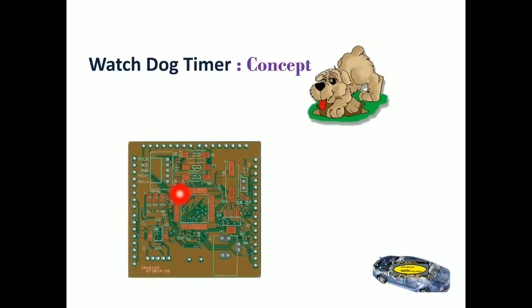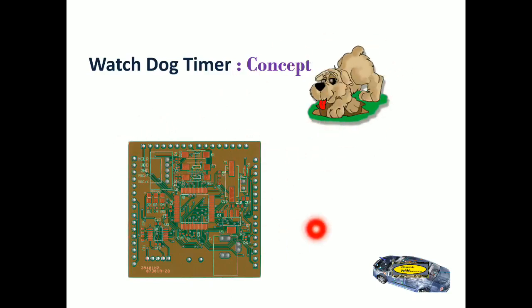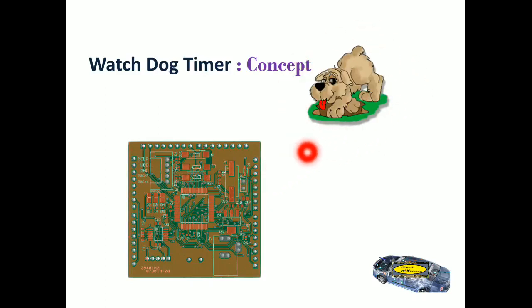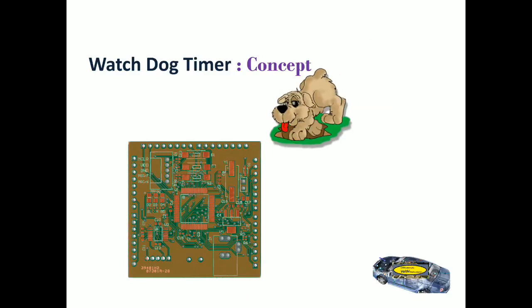This is an ECU, or a processor, or system — in terms of automotive it is an ECU, in terms of embedded electronics it is a processor or any system. And this is a watchdog timer. The ECU is an independent circuit and the watchdog is an independent circuit — there is no direct relationship between the watchdog timer and the ECU.